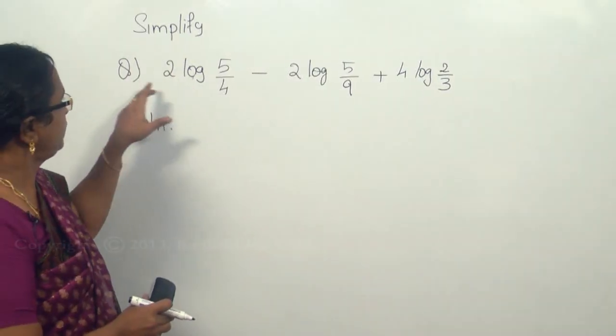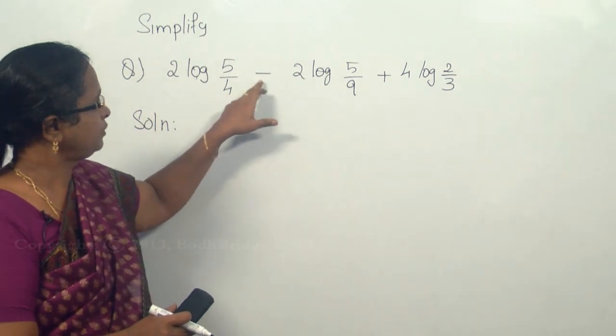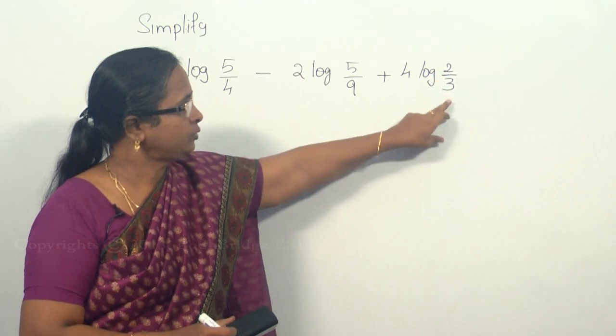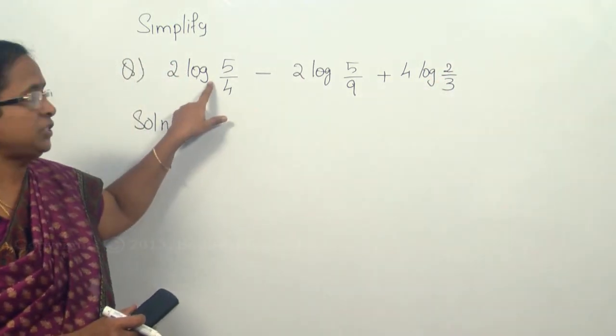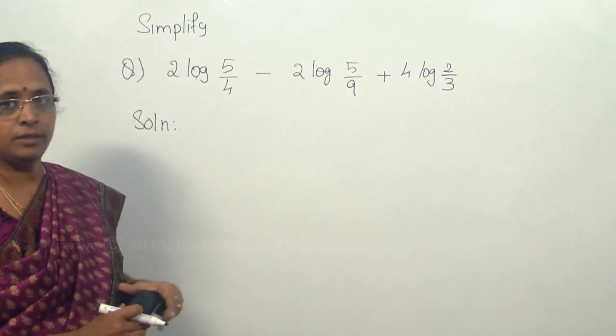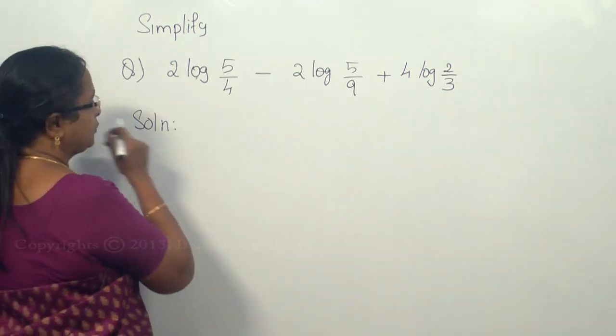Let us solve this problem: simplify 2 log 5/4 minus 2 log 5/9 plus 4 log 2/3. When there is nothing mentioned here, I can consider this as a common log, that is base 10. So that is by default assumed in that way.